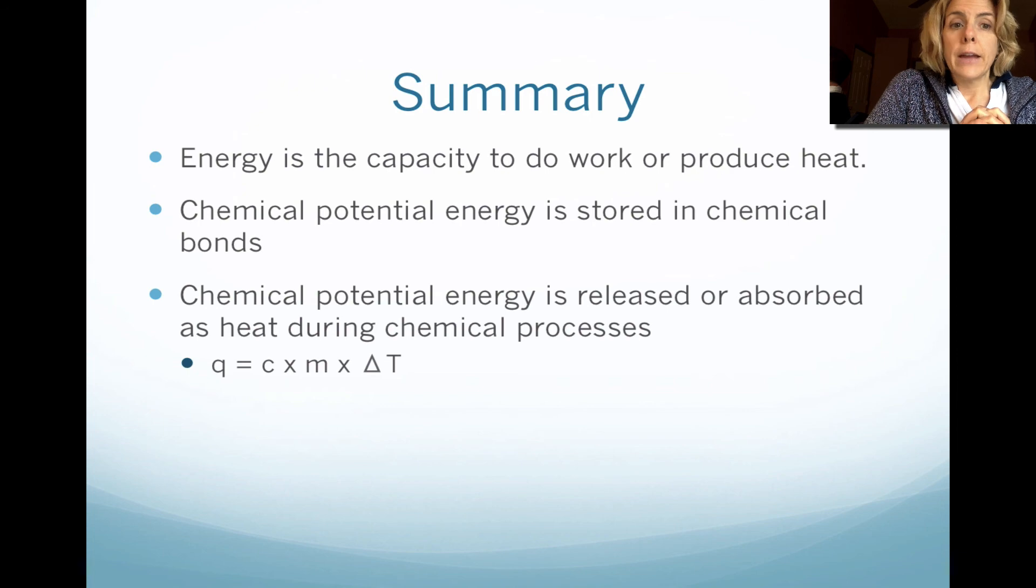So let's summarize. Energy is the capacity to do work or to produce heat. Chemical potential energy is either stored in chemical bonds or released, depending on what's going on. And then lastly, we're looking at the heat calculation, which is specific heat, or C, times mass times delta T.